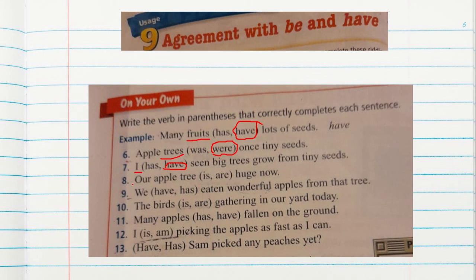Number eight: our apple tree is/are huge now. We know that apple tree is the subject, and we're talking about one. So for singular we use is. Our apple tree is huge now. I want you to complete the rest of the activities. First identify the subject — the subject is before the parenthesis — and then decide which form of the verb to use.